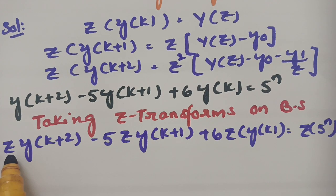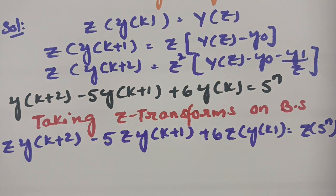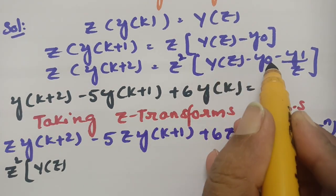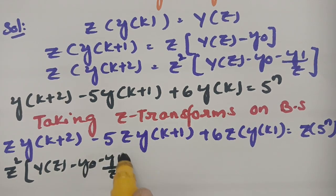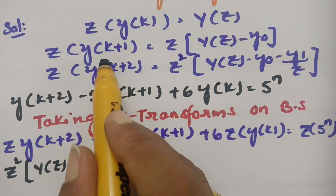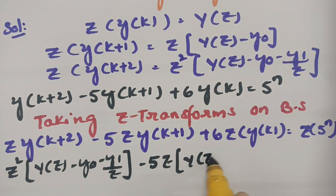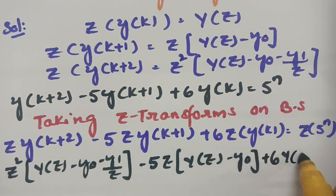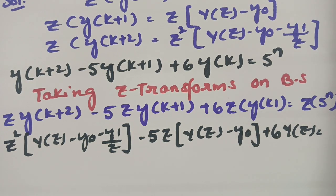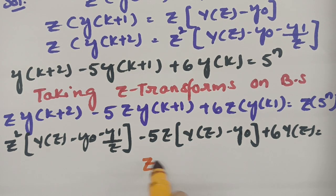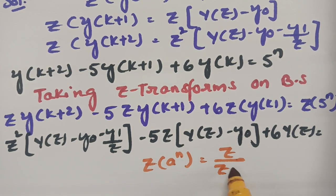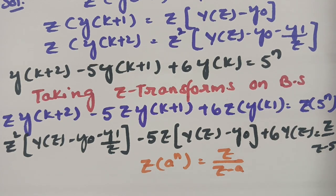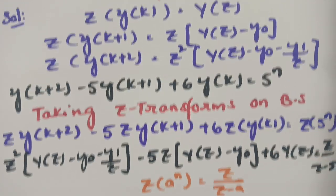Substituting the Z-transform formulas: Z{y(k+2)} = z²·Y(z) - z·y(0) - y(1); Z{y(k+1)} = z·Y(z) - y(0); and Z{y(k)} = Y(z). For the right-hand side, using the special formula Z{a^n} = z/(z - a), so Z{5^n} = z/(z - 5).